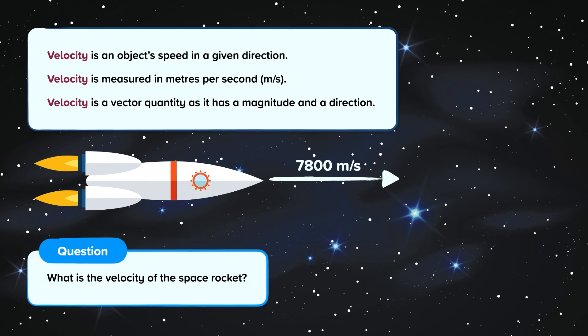What is the velocity of the space rocket? The rocket has a speed of 7,800 metres per second, but it has a velocity of 7,800 metres per second to the right. As velocity is a vector, it requires a direction too.